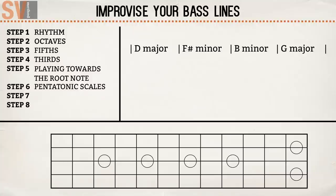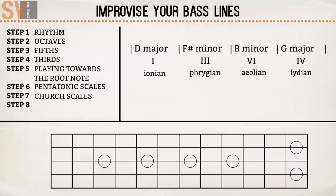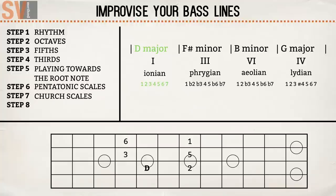The seventh step contains playing church scales. Every chord in a chord progression has a scale that sounds natural. If you want to know more about this, you can check out SV method. In this chord progression, the scales consist of a series of intervals — I elaborate on this in the church mode video. From the previous steps you already know six intervals, so this next step provides you with two additional notes. You can add these new intervals in your improvisation.